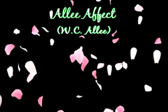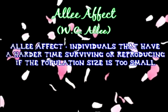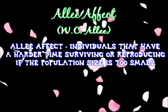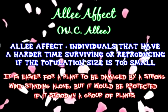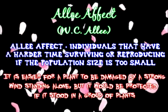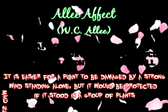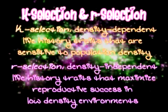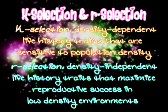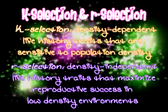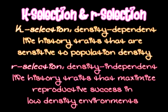The logistic model shows that as each individual is added to a population, it has the same negative effect on population growth rate. However, some populations follow the Allee effect, in which an added individual has a positive effect on population growth rate. K-selection tends to maximize population size and operates in populations living at a density near the limit imposed by resources. R-selection tends to maximize the rate of increase and occurs in environments where population densities fluctuate well below carrying capacity.